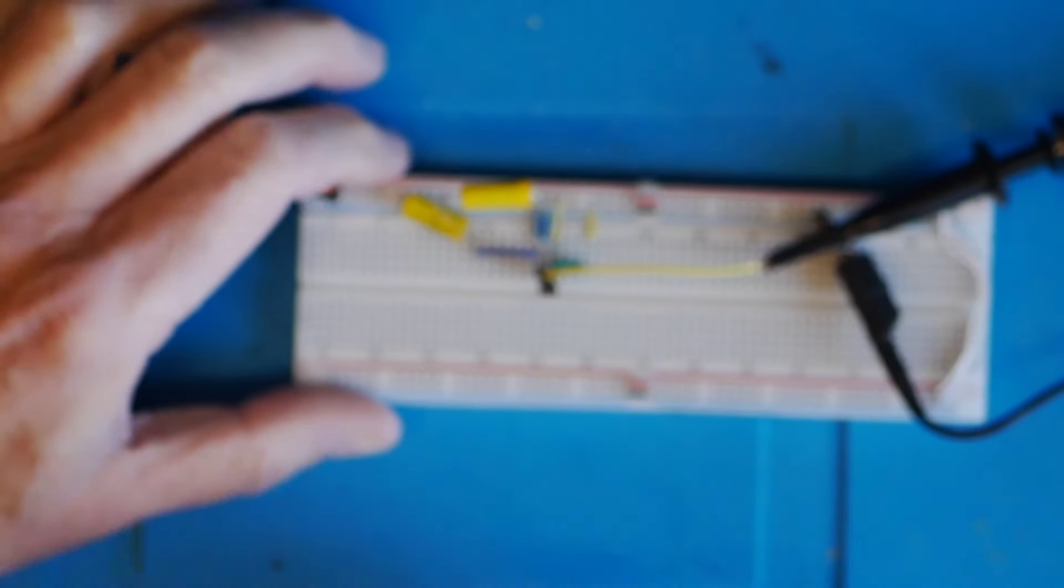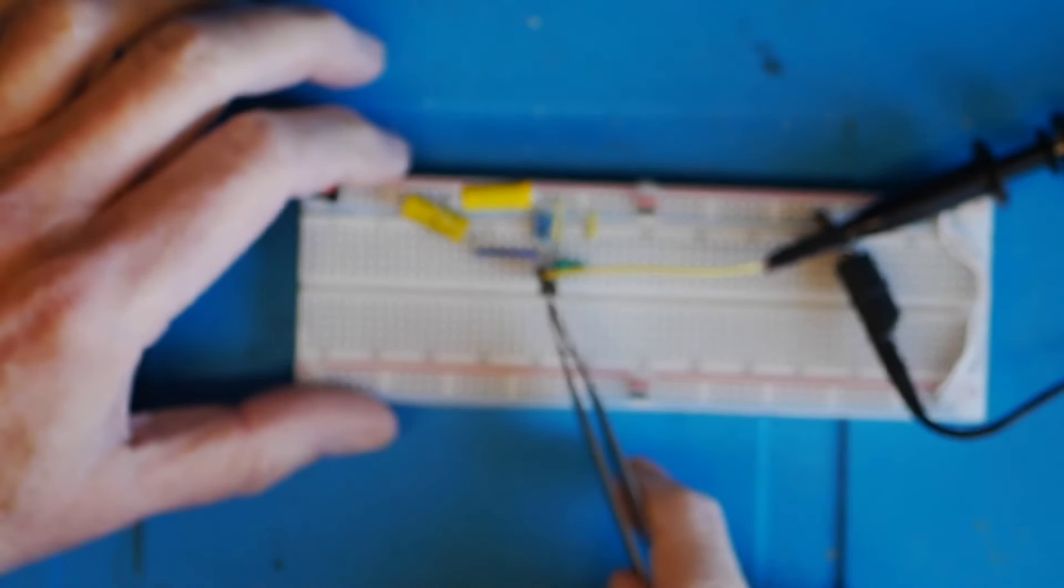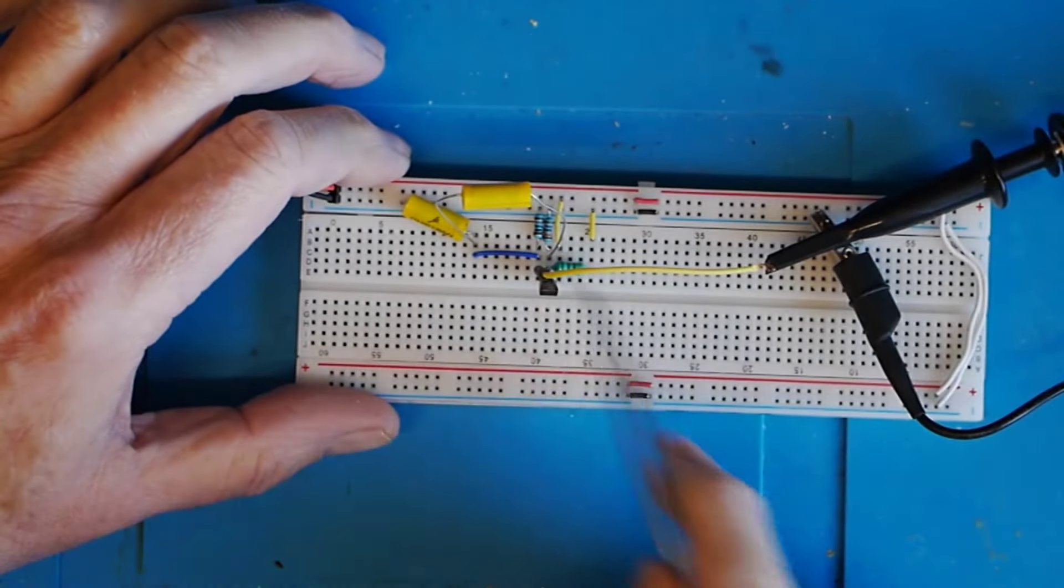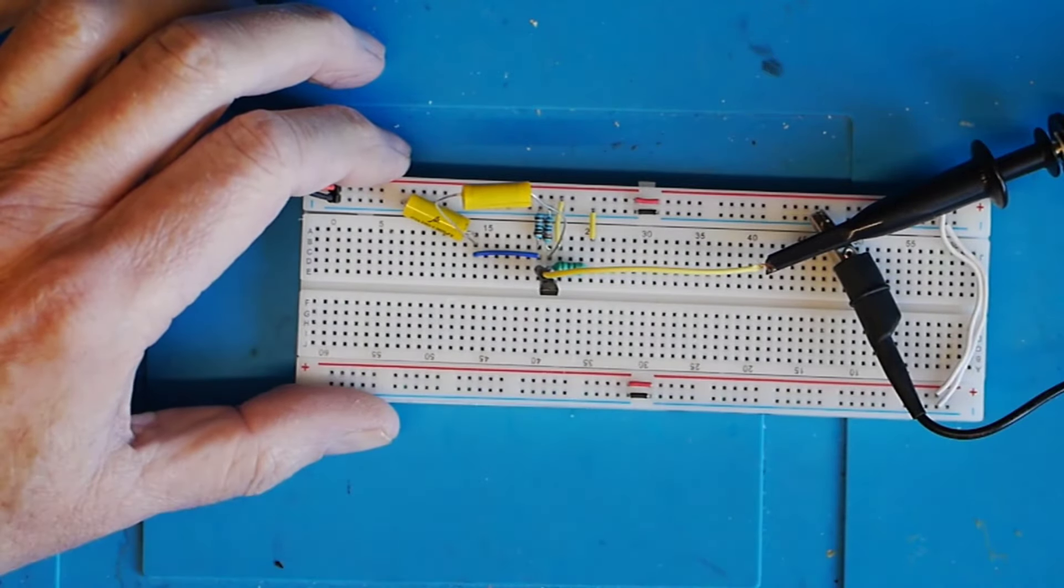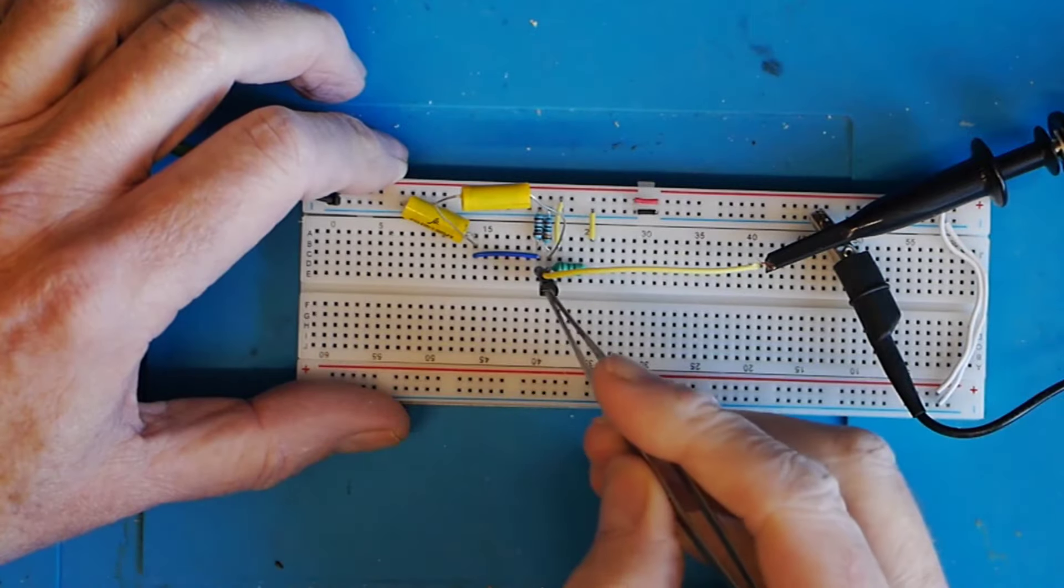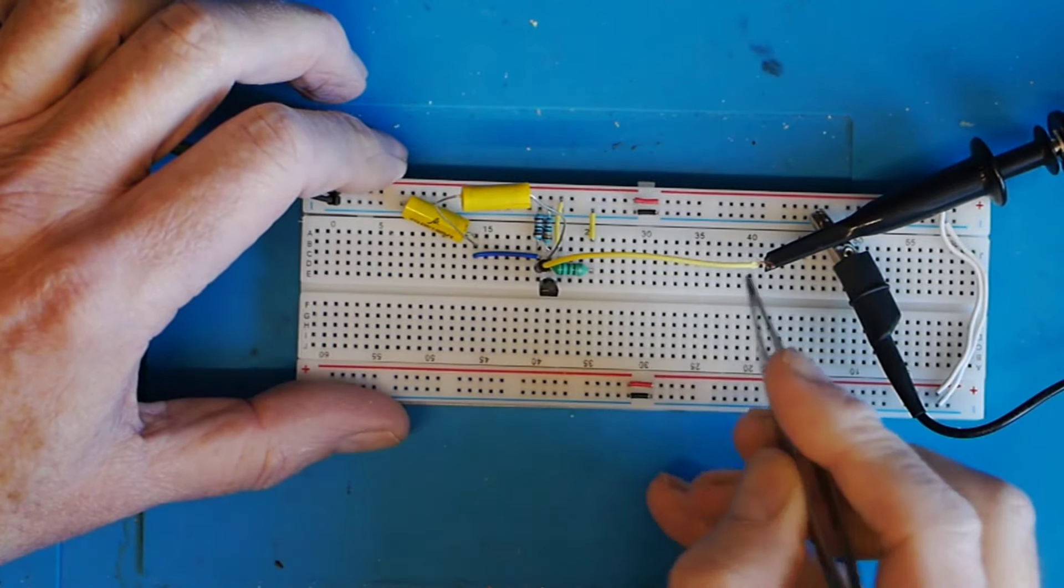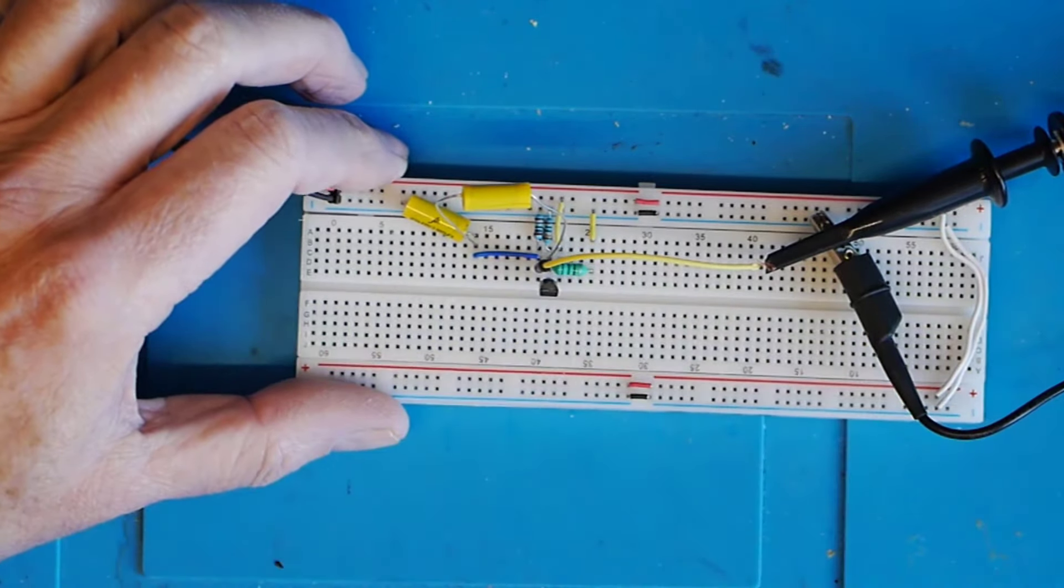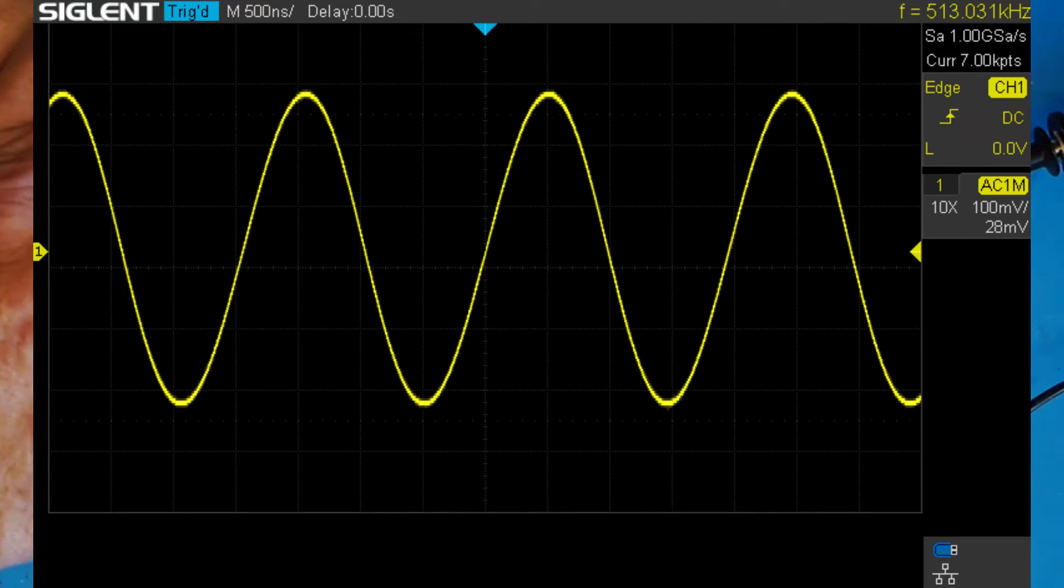Here's the LC oscillator then with the JFET just here, inductor there, and these are the two capacitors - they're high voltage ones which is why they're as large as I mentioned. I'm just picking up the signal there. Let's have a look on the scope and you can see it's got a very nice sine wave at about 500 and something kilohertz here.